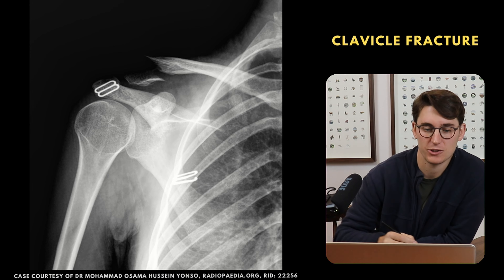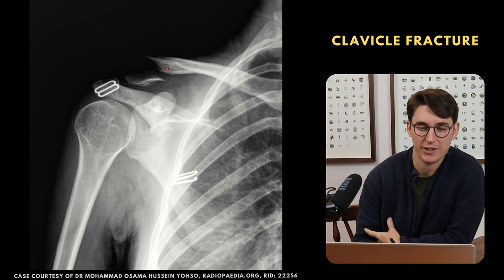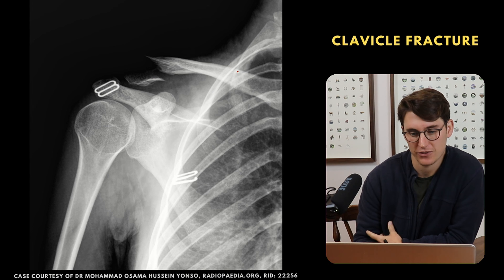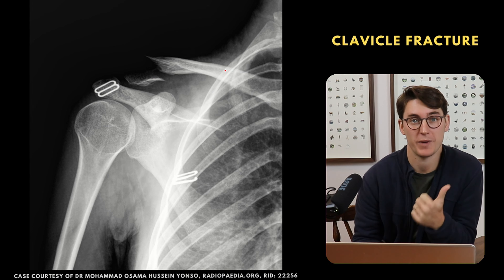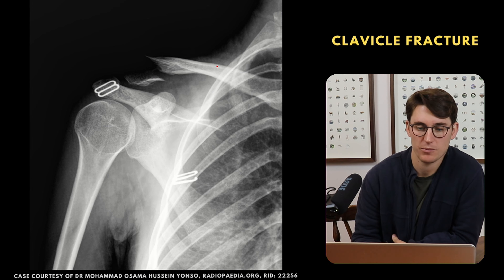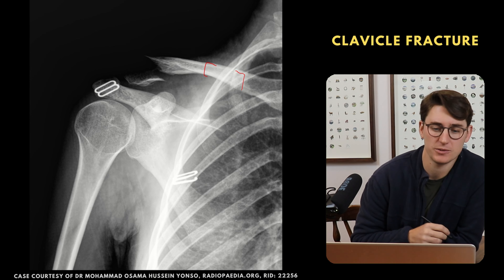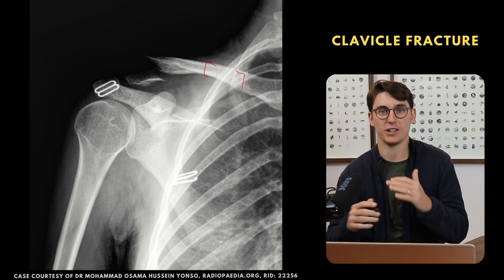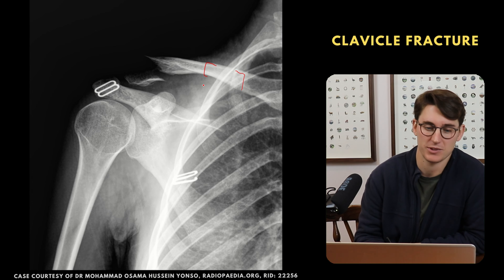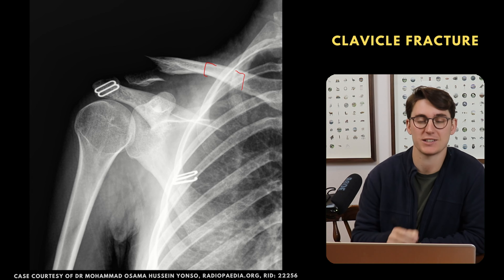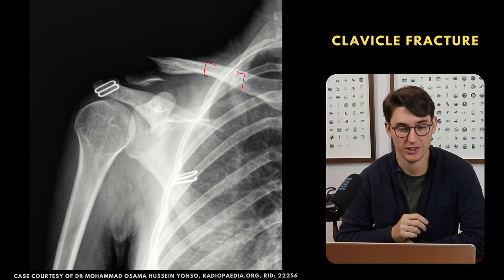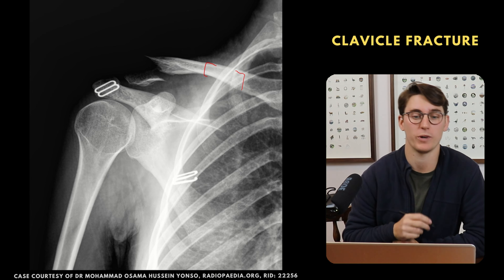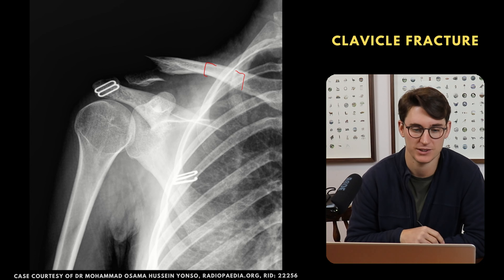Moving on to clavicle fracture. Here we can see quite obviously a distal clavicular fracture. Most clavicle fractures are traumatic and occur in the mid shaft, but here we have a distal clavicular fracture. You'll need another view to assess the extent of displacement — whether this can be treated conservatively, as most clavicle fractures are, or whether surgical intervention is needed.